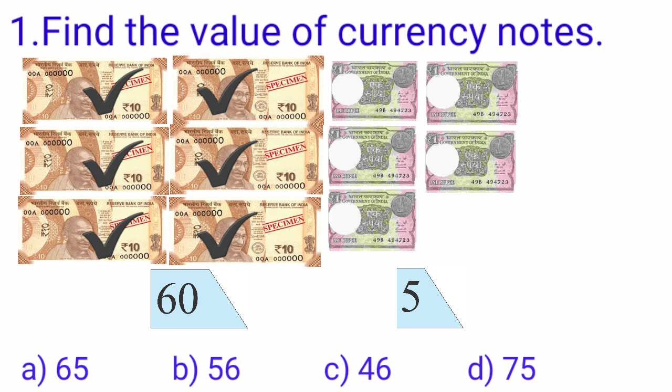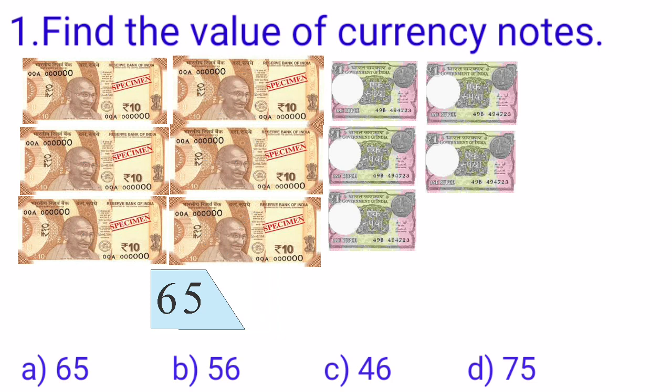So the number formed is 60 and 5: 65. Now look at the options. Option A is 65. It is the correct option. We have found the right option. So we will put a tick mark at option A that is 65.